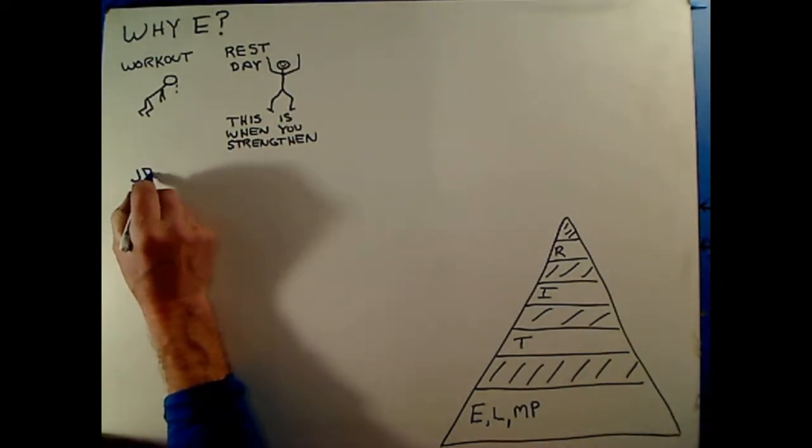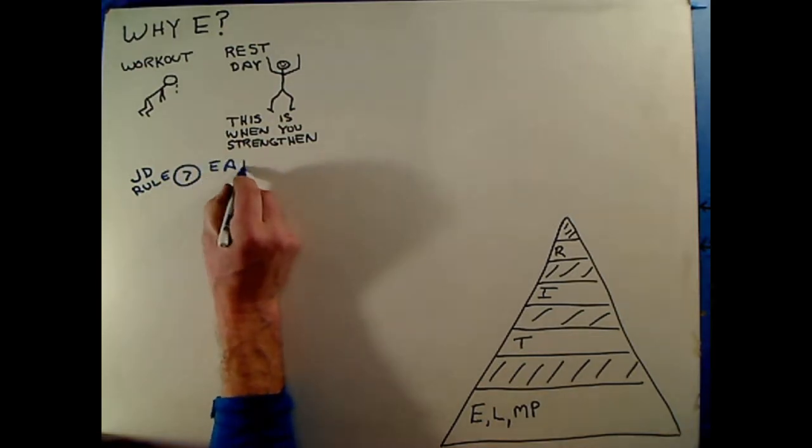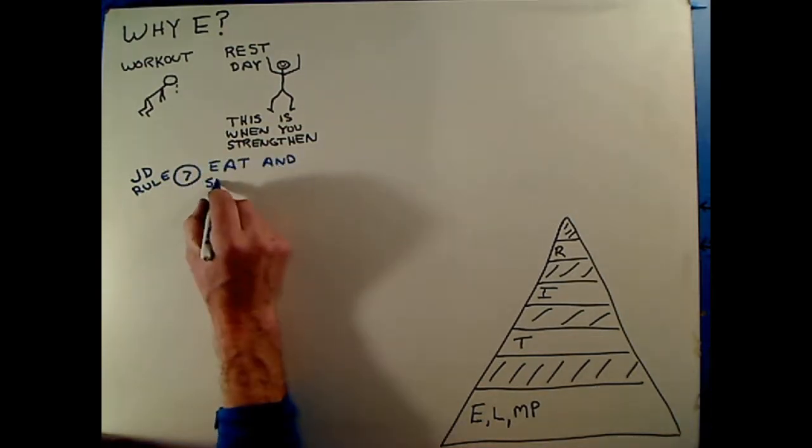So let me write something. Here's a Jack Daniels rule. I put him in blue and circled the number. This is rule number seven: Eat and sleep well. It can't be emphasized enough.